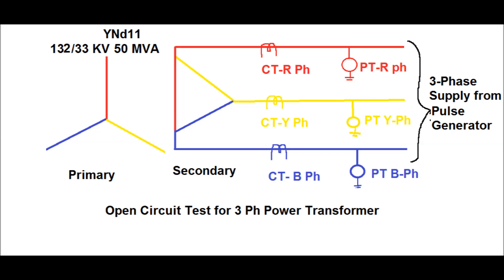The LV side, that is the delta side, is 33 kV, therefore from the pulse generator a 33 kV voltage supply has been given. This test is mainly done at the factory to measure and record the no-load losses. The no-load current and no-load losses are measured by the secondary input of PT and secondary input of CT connected in each phase, as shown in this diagram.